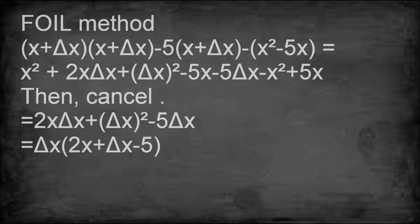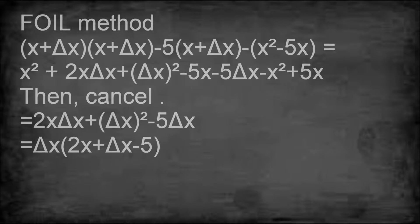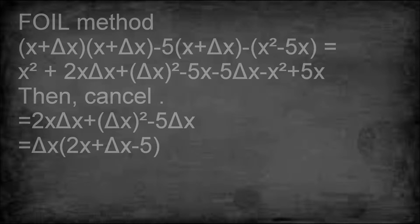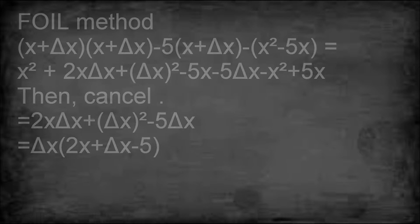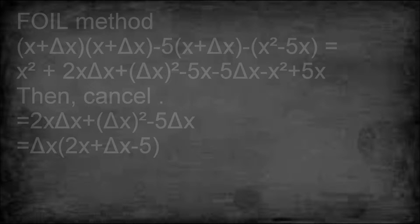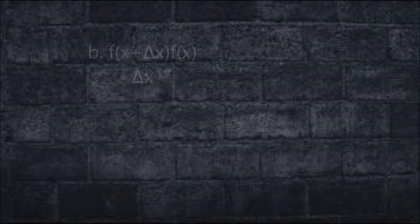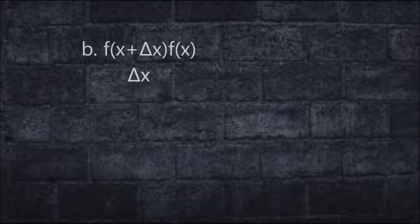So we factor this and the result is delta x in parentheses, 2x plus delta x minus 5. So we're done with letter a.